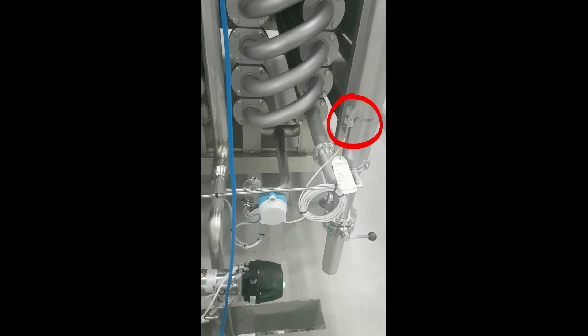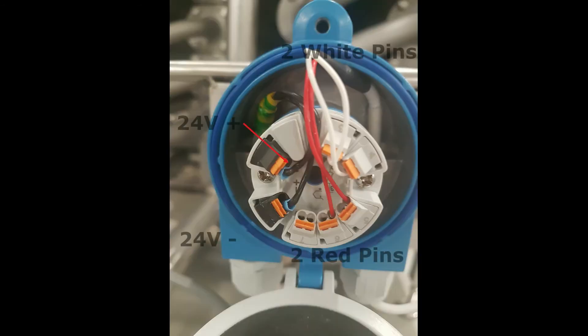In the transmitter we have 24 volts DC supply and 4 to 20 milliamp signal. Two white pins and two red pins of the surface probe as you can see.